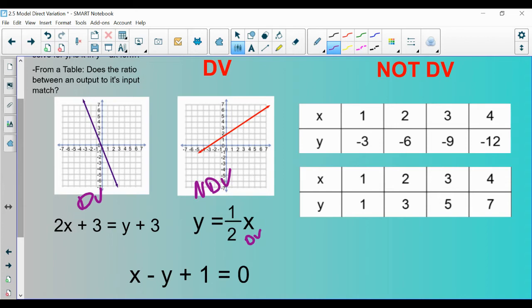We have two other examples. If we solve them for y, we should see if it goes into y equals ax form. So this one here, y is not by itself. It has a plus 3. If I subtract 3 on both sides, I get y equals 2x. This is direct variation because it looks like y equals a times x.